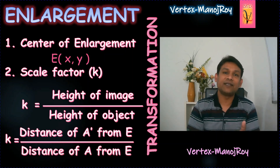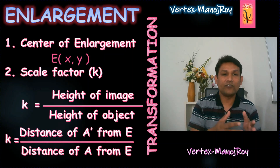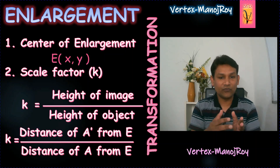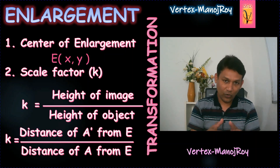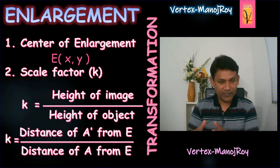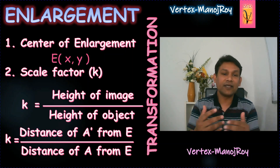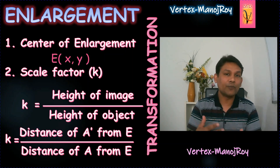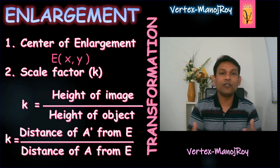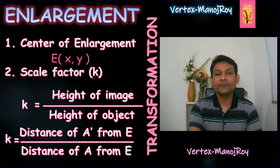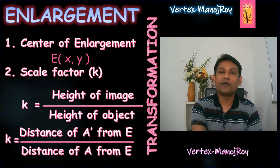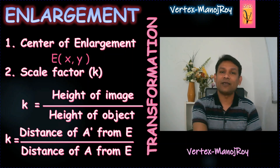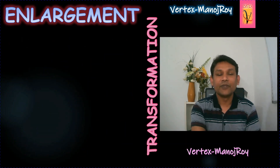You can use two triangles or two shapes, but the corresponding sides will be divided — image with object — to get the scale factor. The second formula of the scale factor is the distance of A-dash (the image) from the center divided by the distance of the object from the center.